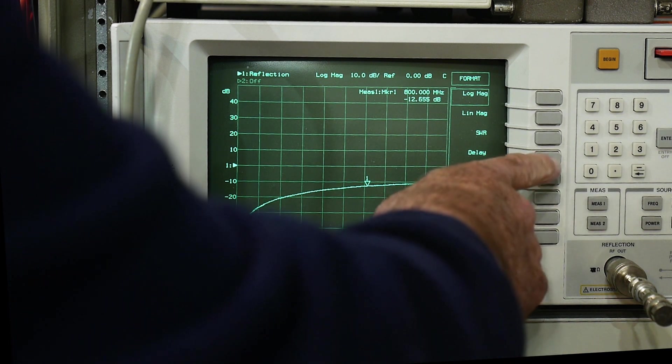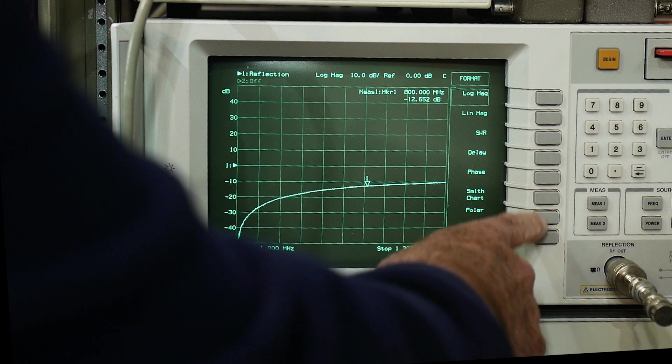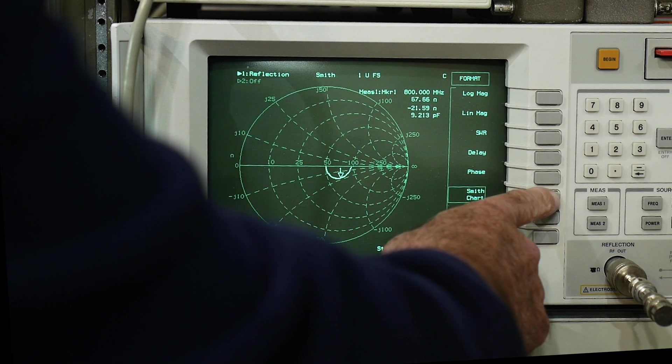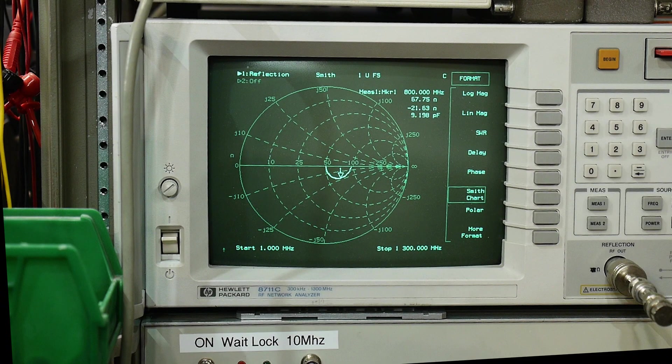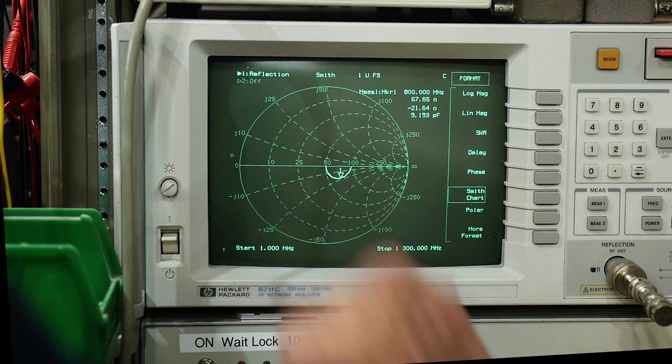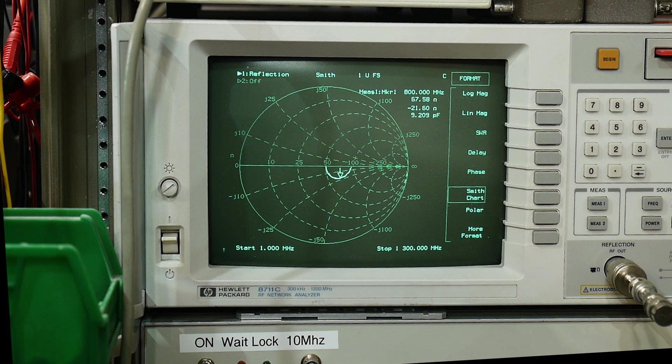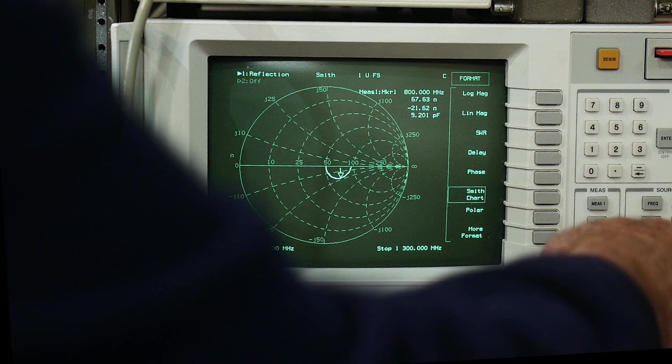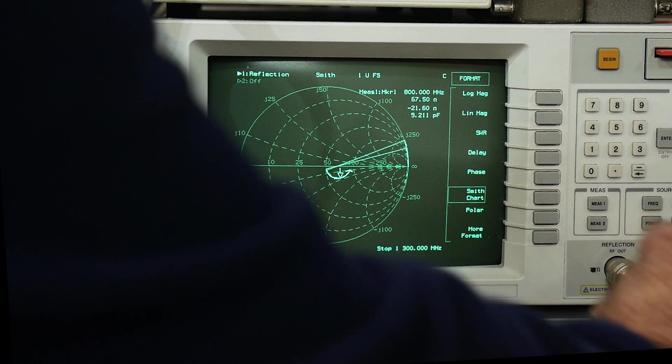And then we can do a Smith chart, why not? Yeah, there we go. So it's kind of looping over to 100 ohms there, something like that. I don't think we saw the other one on the Smith chart.